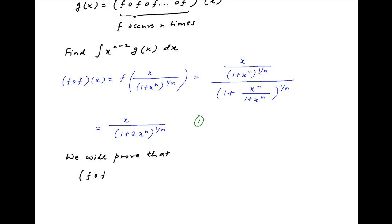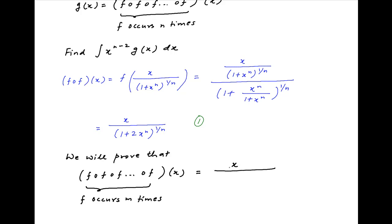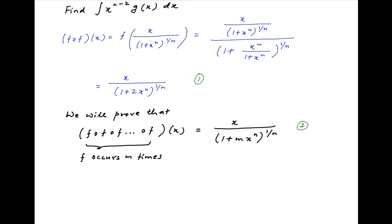Now we will prove a more general result: that f of f of ... and so on m times of x is equal to x upon 1 plus m times x raised to the power n, whole raised to the power 1 upon n. Let's denote this by Result 2. We will prove Result 2 by mathematical induction.